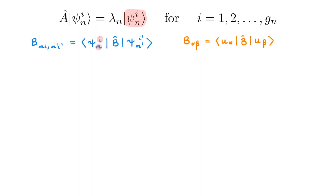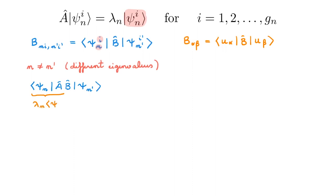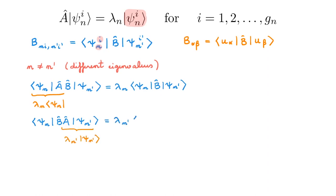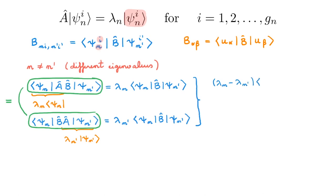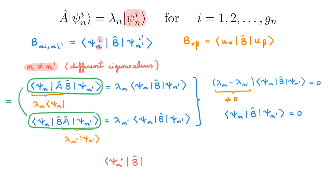Let's start with the case for which n is different from n', corresponding to eigenstates of A with different eigenvalues. To simplify notation I omit the index i for the time being. We can write psi n AB psi n' and use the fact that psi n is an eigenstate of A with eigenvalue lambda n to obtain one expression. If we instead look at psi n BA psi n', we use the eigenvalue equation for A to get lambda n'. Because A and B commute by hypothesis, these two terms are equal, and we can set the right-hand sides equal to each other. As n is different from n', this term is not zero, so this equality can only be true if the matrix element of B vanishes. Recovering the i index, for n different from n' the matrix element B ni n'i' equals zero.